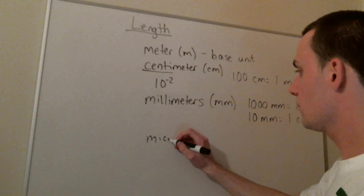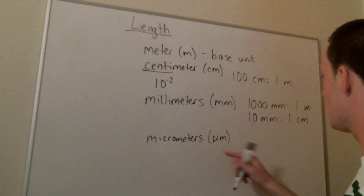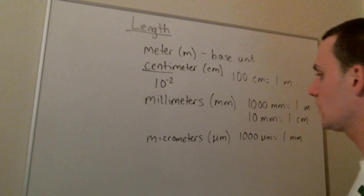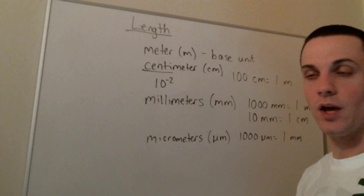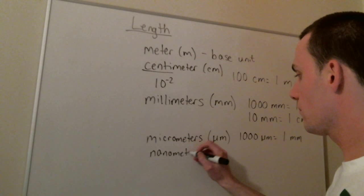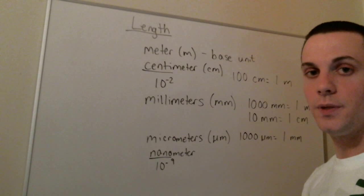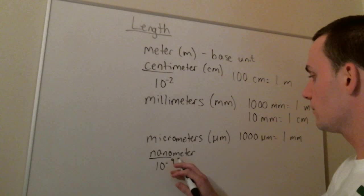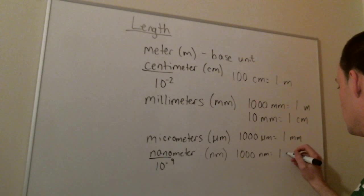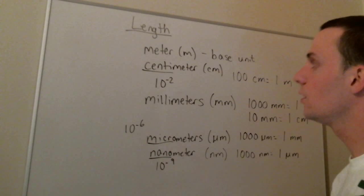We can use micrometers, which most textbooks will use mu-m, and there's a thousand micrometers in one millimeter. We can go even smaller than a micrometer. And we typically do this when looking at the cellular level of different things. And that's using a nanometer. Now, nano is 10 to the negative 9th. So there's one billion nanometers in one meter. So there's a thousand nanometers in one micrometer. Remember micro is 10 to the negative 6th, and there's one million micrometers in one meter.